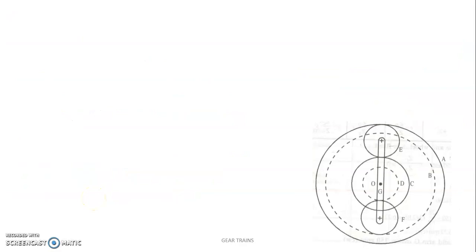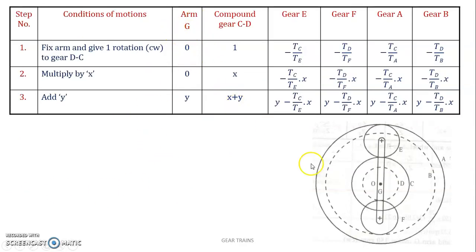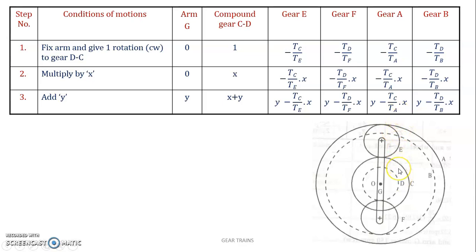Once the teeth are found, draw the tabular column. You need: arm, compound gear CD at center, then gears E and F, then A and B. Give the arm 0 rotation and compound gear 1 rotation. For gear E, C drives E — it is a simple gear train, direction opposite — so it is minus TC by TE. For gear F, D drives F — so it is minus TD by TF. For gear A, C drives E and E drives A — compound gear train, TC by TE times TE by TA, giving TC by TA. Similarly for B: TD by TF times TF by TB gives TD by TB.